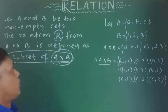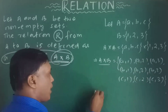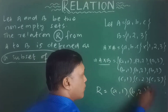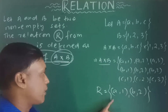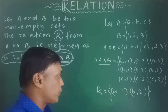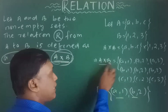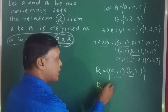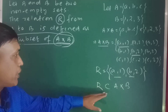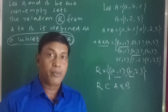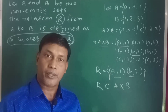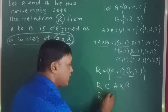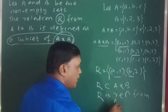Let us take an example. Here A×B is the product set. I take a set R = {(A,1),(B,2)}. R is a set consisting of two elements. The elements (A,1) and (B,2) are present in A×B, which means R is a subset of A×B. By the definition of relation — any subset of a Cartesian product is a relation — R is a relation from A to B.